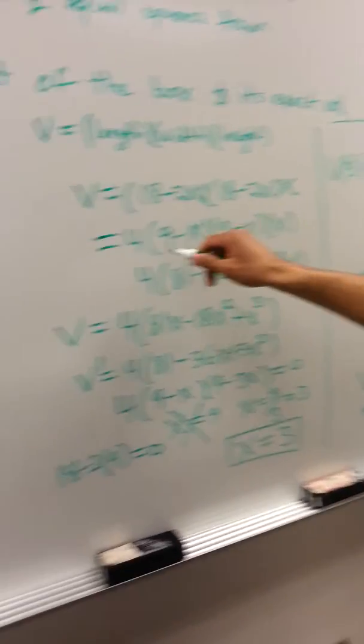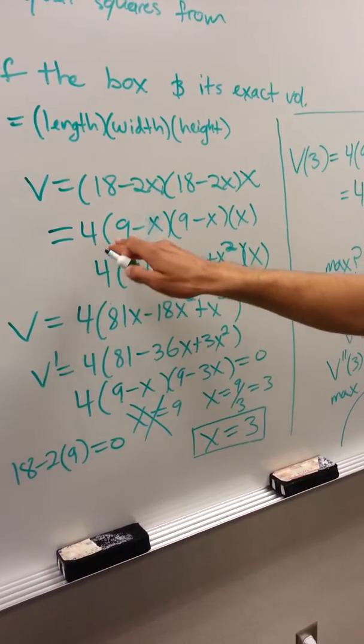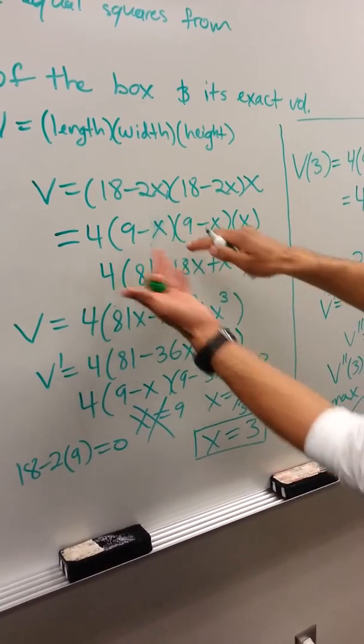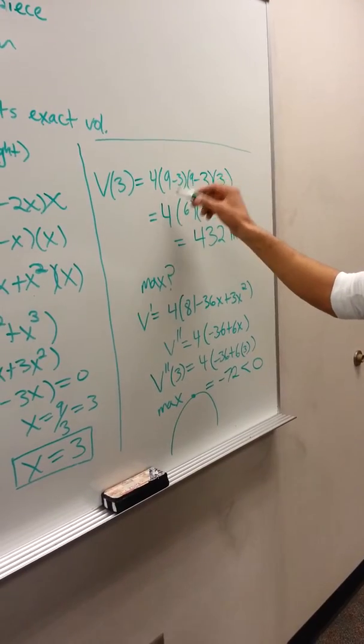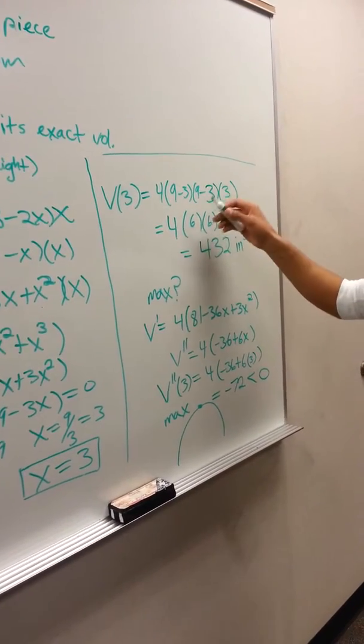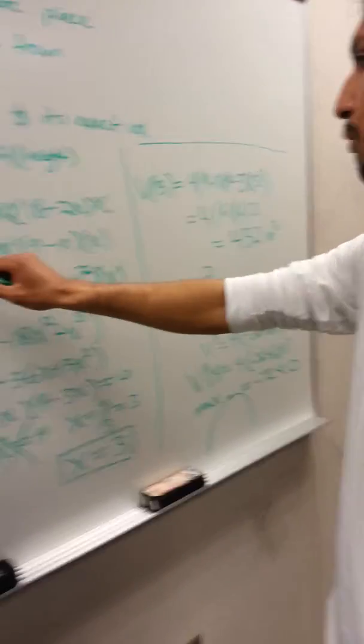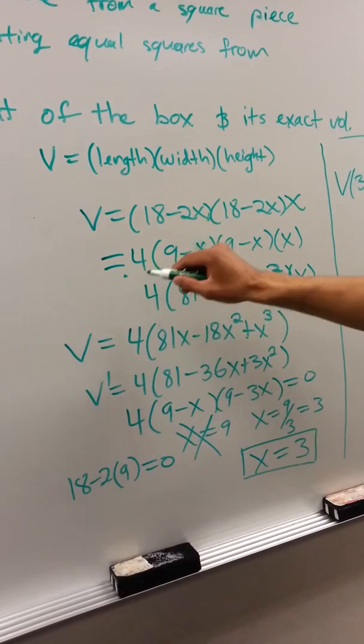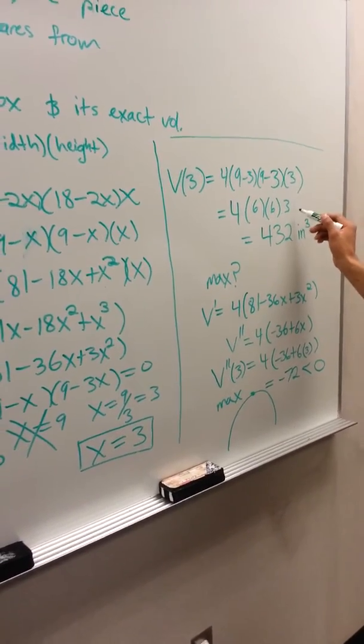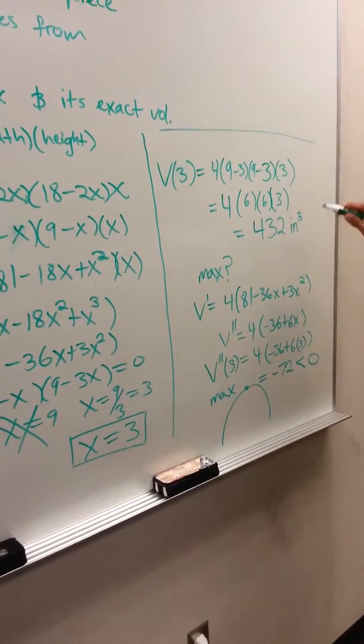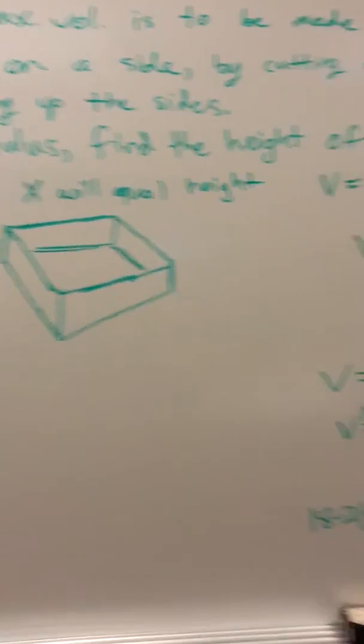Now I'll plug this 3 back into our original equation after we simplified it down. V(3) = 4(9-3)(9-3×3). I just plugged in 3 for x. What we get is 4 × 6 × 6 × 3, which gives us the volume of this box with the open top, and it will be 432 cubic inches.